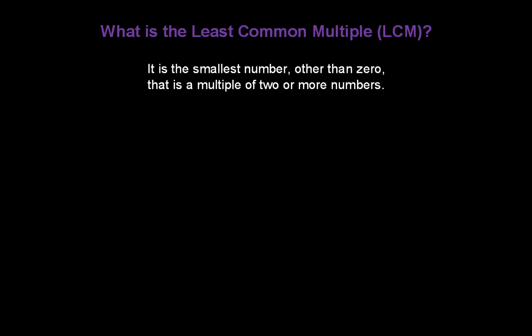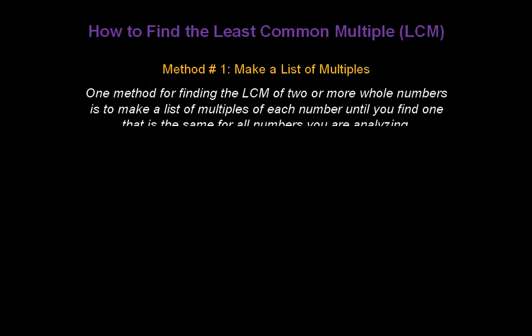Now, what is the least common multiple, or LCM? It's the smallest number, other than zero, that's a multiple of two or more numbers. Here are a couple of methods for determining the LCM. Method number one: one method for finding the LCM of two or more whole numbers is to make a list of multiples of each number until you find one that's the same for all numbers you are analyzing.